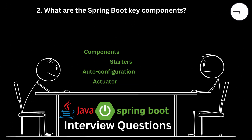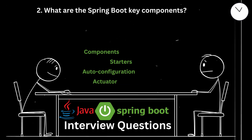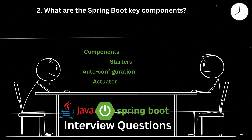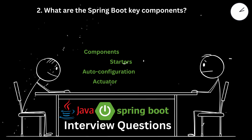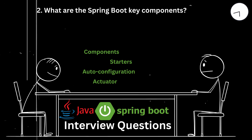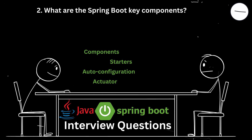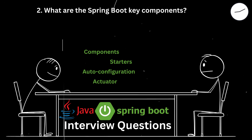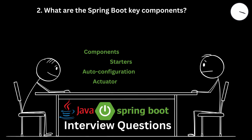What are the Spring Boot Key Components? Key components of Spring Boot include Spring Boot Starters — pre-defined starter templates for various functionalities, e.g. Spring Boot Starter Web. In a CRM application project, we used Spring Boot Starter Data JPA to handle database interactions, which included Hibernate and JPA dependencies.